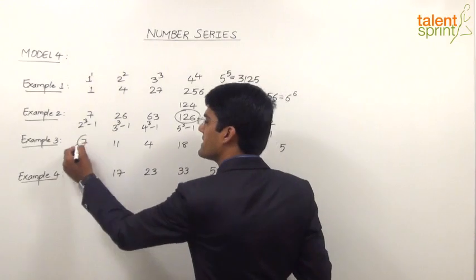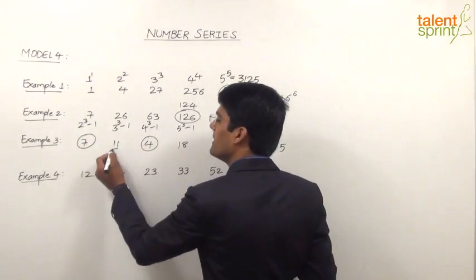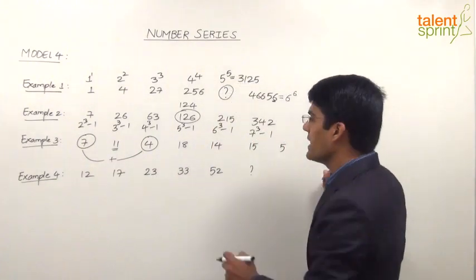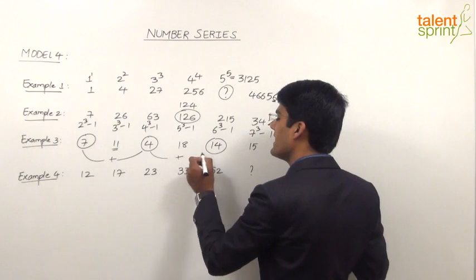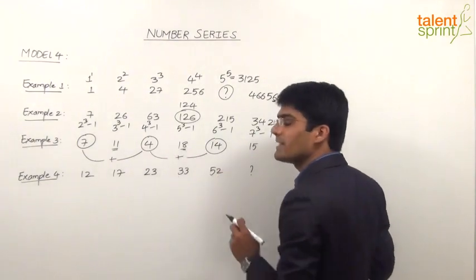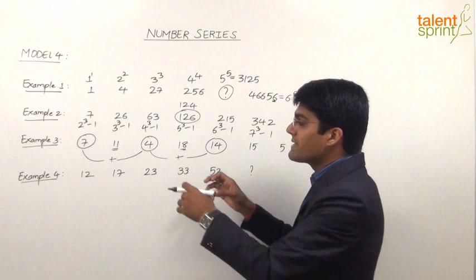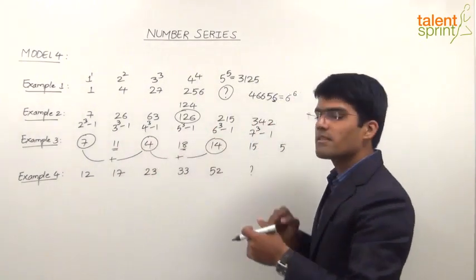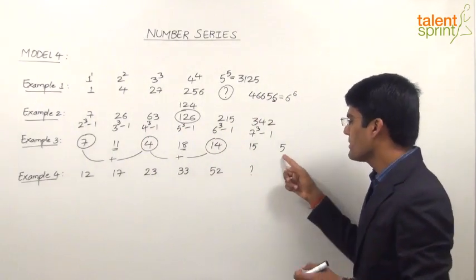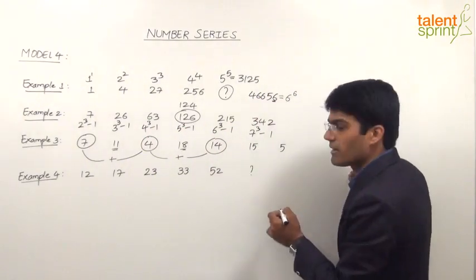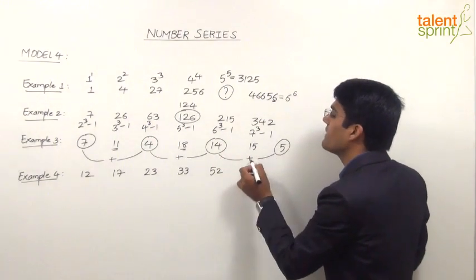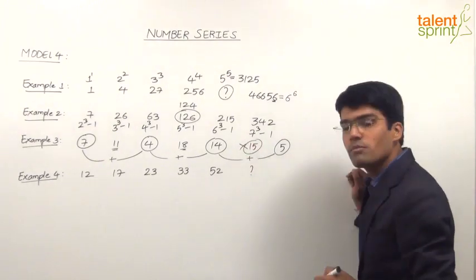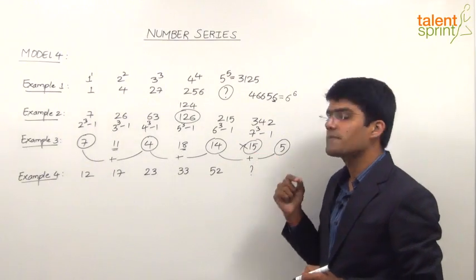But if you observe here, 7 plus 4 will be equal to 11. That means the addition of these two numbers will give us the middle number. Likewise 4 plus 14 will give us 18. So we find that sum of two numbers gives us the middle number. Similarly, 14 plus 5 should be giving us the middle number. But 14 plus 5 is equal to 19 whereas the given number here is 15. So we can say that 15 is a wrong number. It should be replaced by 19.